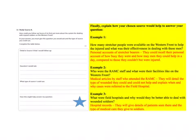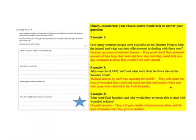Example 1 considers the question about how many stretcher people were available on the Western Front and their effectiveness. Personal accounts of stretcher bearers could recall how busy they were and how many men they could help in a day compared to those they couldn't. Example 2 looks at who were the RMAC staff and what were their facilities like. Medical articles by staff who attended the RMAC will detail the type of wounded they could and could not help, and explain when and why cases were referred to the field hospital. Example 3 considers what were field hospitals and why they would be better able to deal with the wounded — hospital records will give details of patients seen there and the type of medical care given to soldiers. Whichever you choose, you will need your explanation, shown in red, written here.